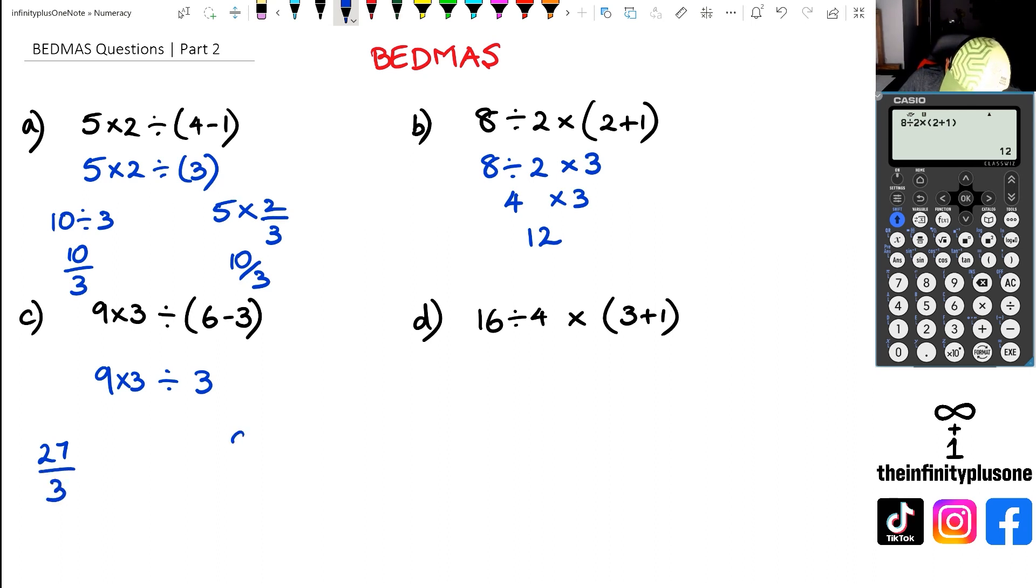Or you could have actually done 9 multiplied by 3 divided by 3. Now 27 divided by 3 is 9, 9 times 3 divided by 3 is 9. And what we end up with, either way we do it, we're actually going to end up with the answer of 9.